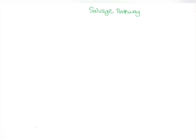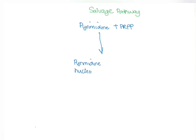Now let's talk about the salvage pathway. The salvage pathway was also present in the synthesis of purines; however, for pyrimidines, only a few nucleotides go through this pathway. The pyrimidine and PRPP, similarly to what we've seen with purines, form a pyrimidine nucleotide in the presence of pyrimidine phosphoribosyltransferase.